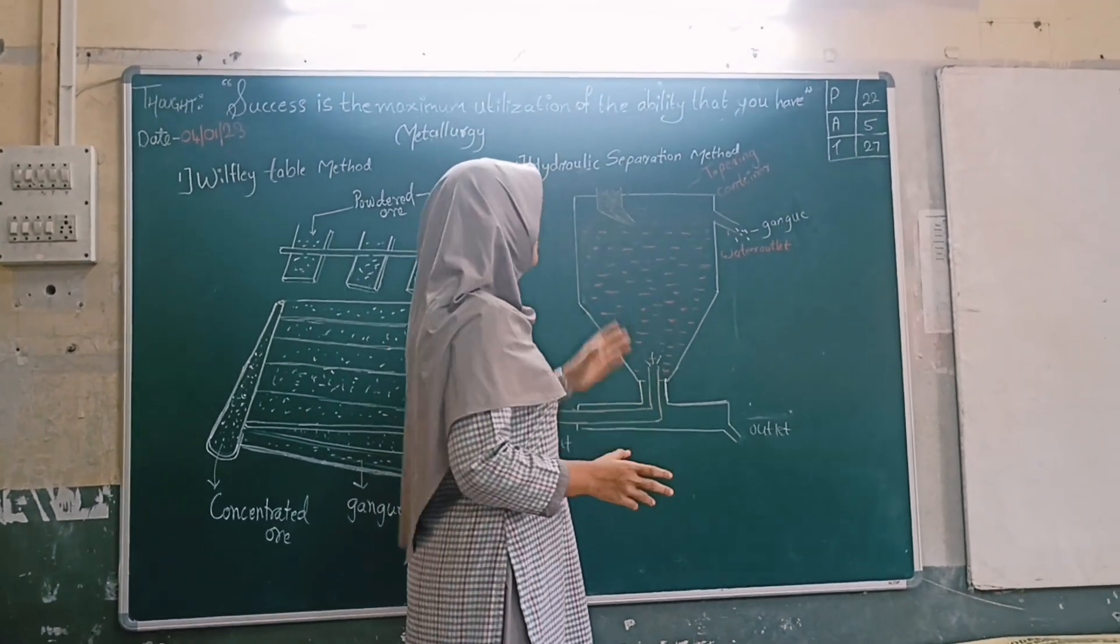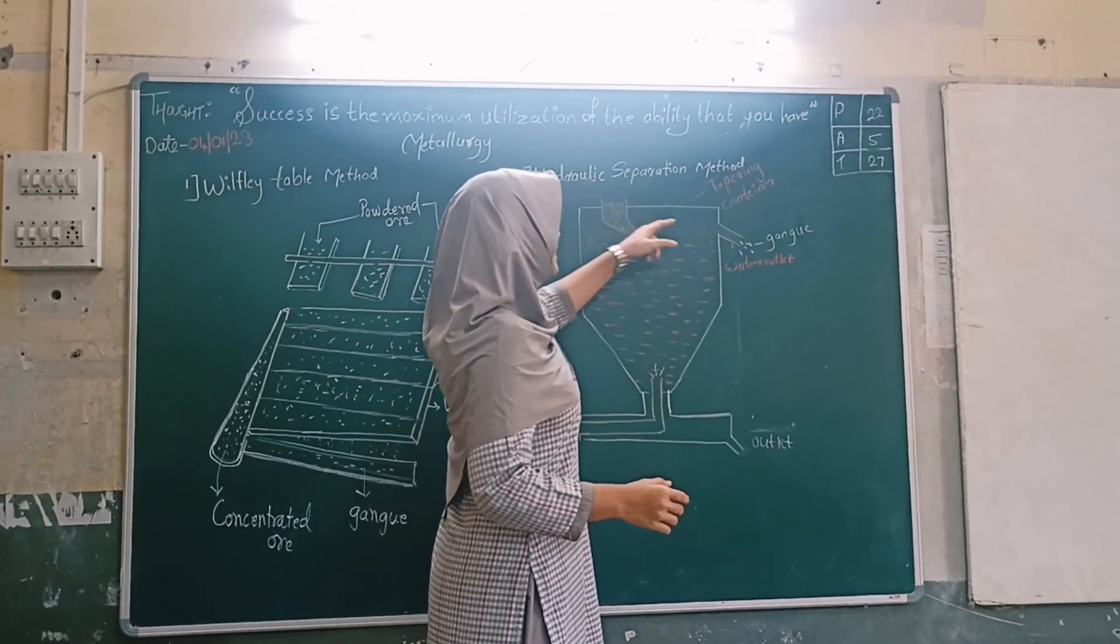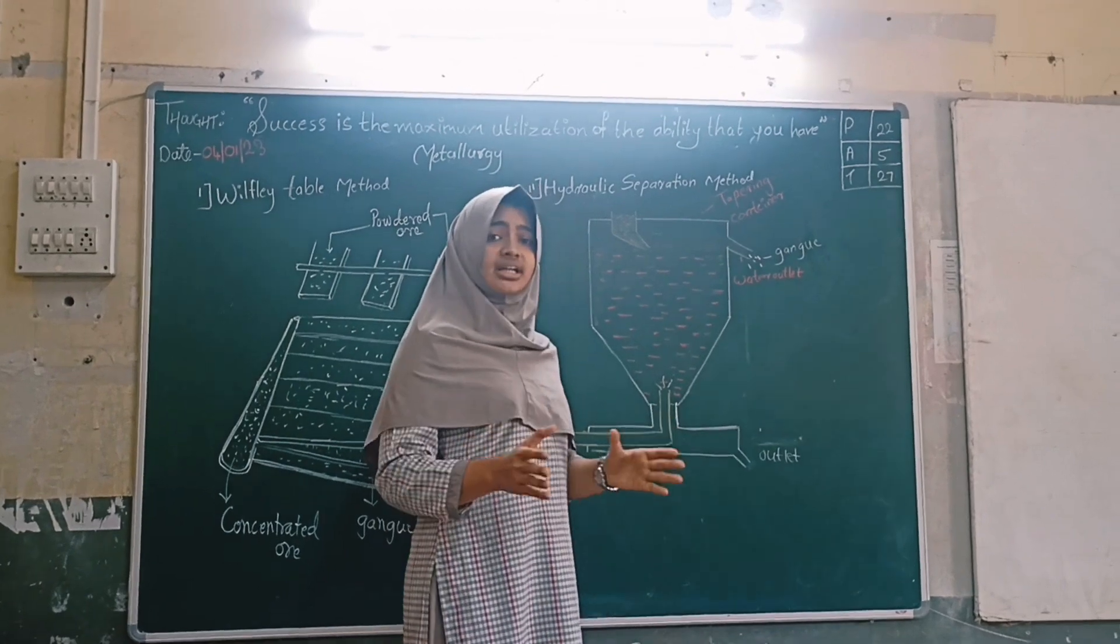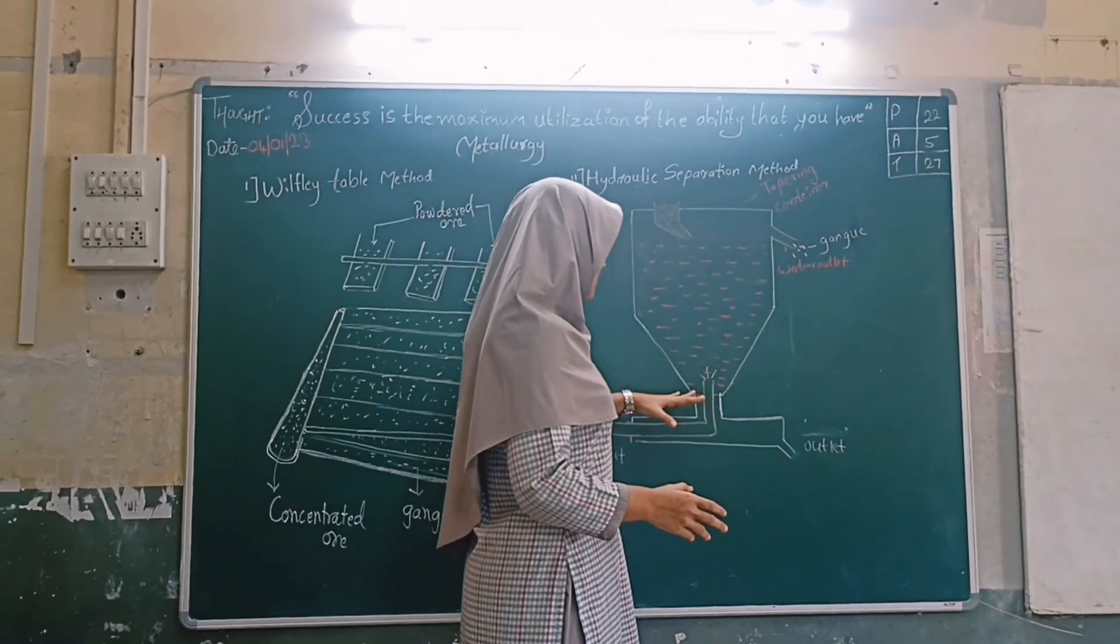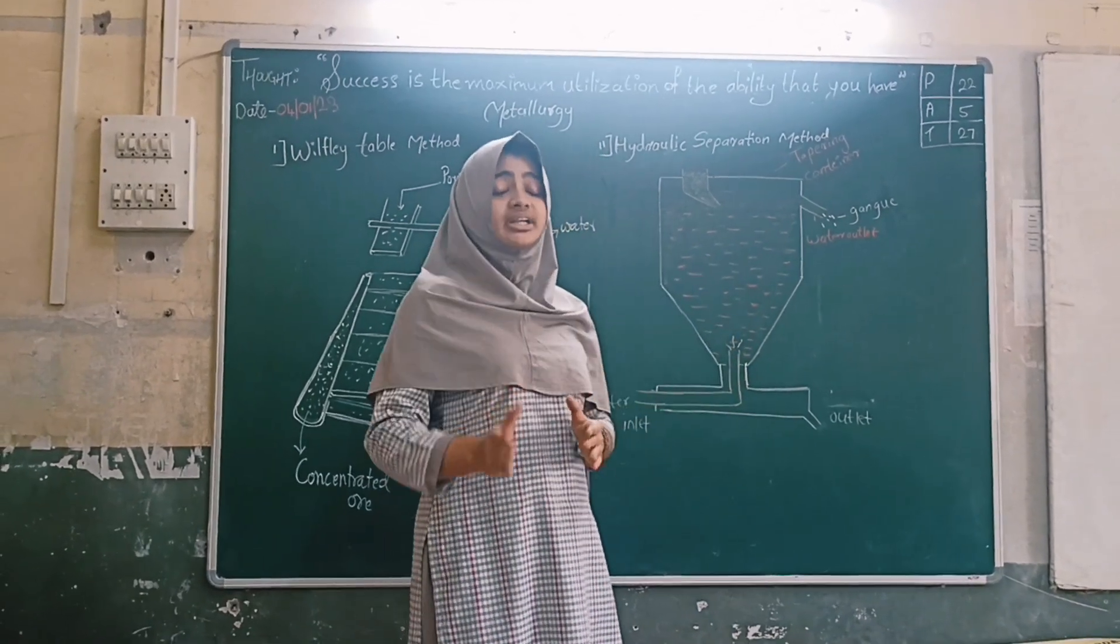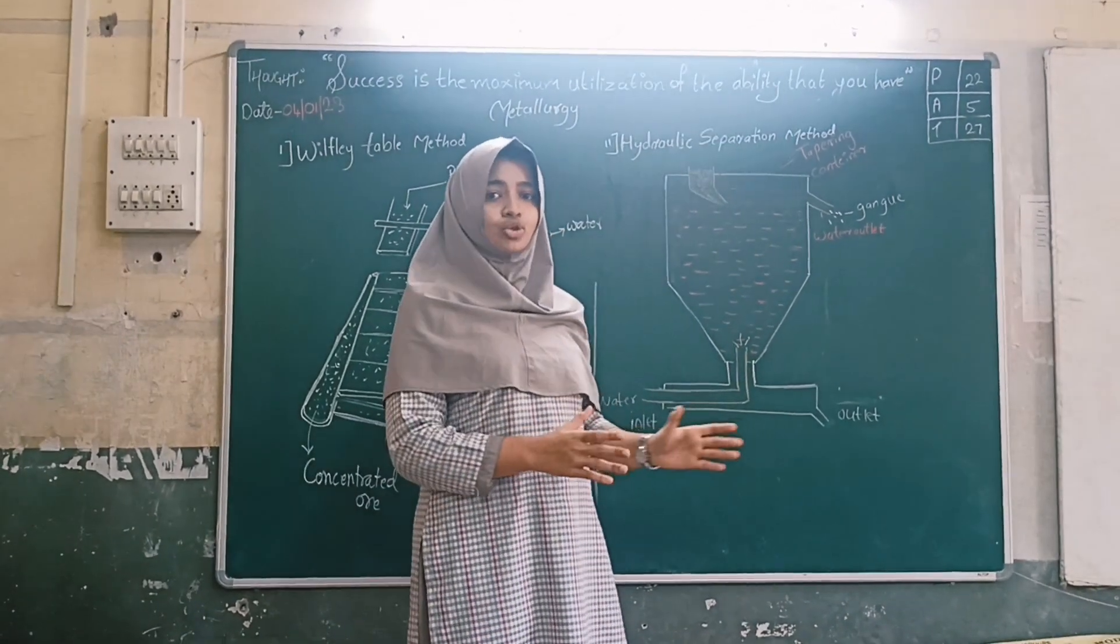As the gangue are lighter particles, they will flow in the water and get dissolved and come out from this water outlet. And as the metals are heavier particles, they will settle down and come from here. In this way, metal can be separated from the ore.